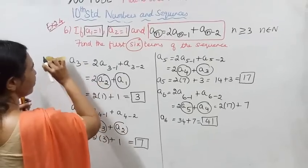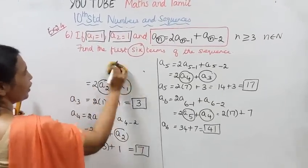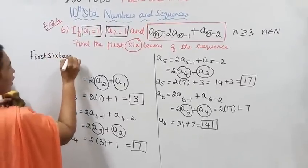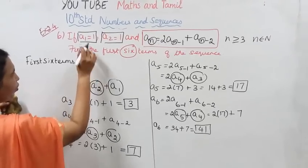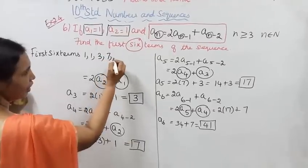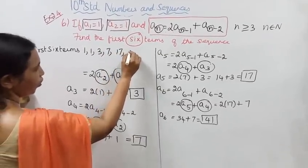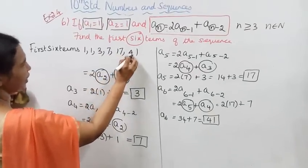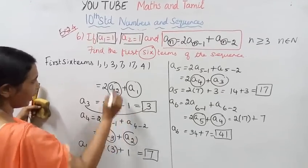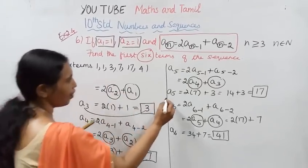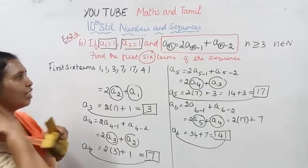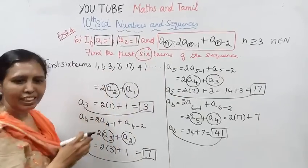First six terms: A1 is 1, A2 is 1, A3 is 3, A4 is 7, A5 is 17, A6 is 41. So the first six terms of the sequence are 1, 1, 3, 7, 17, 41.